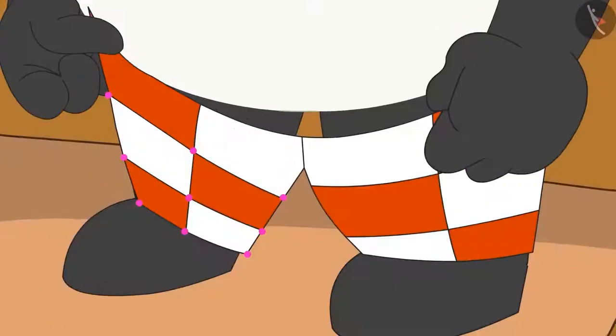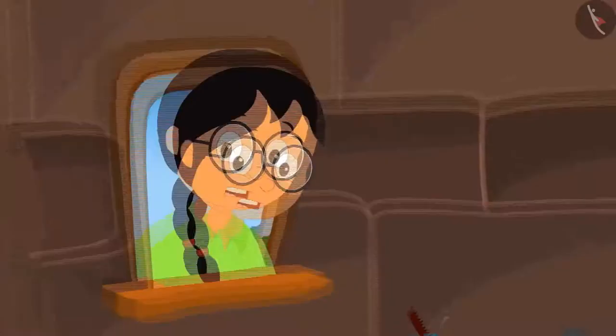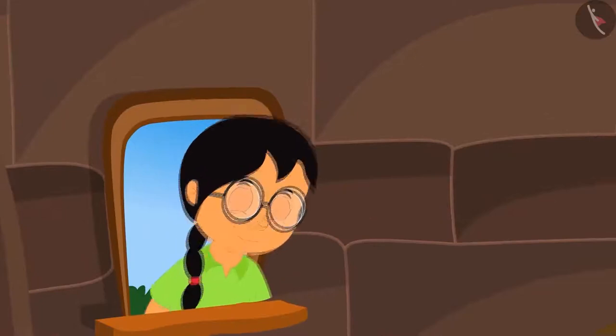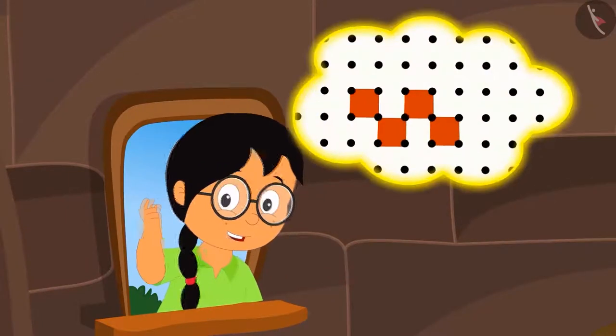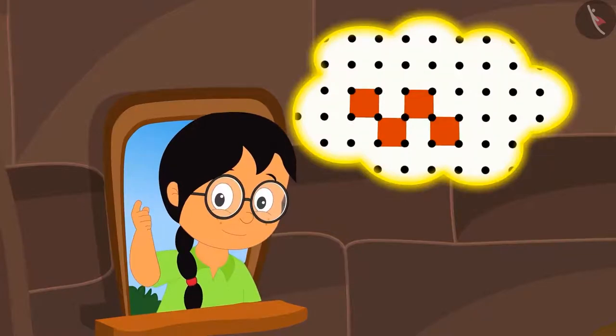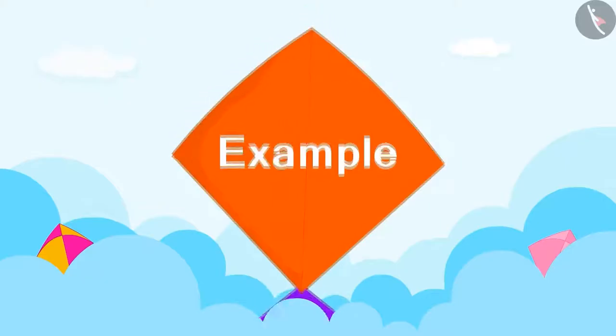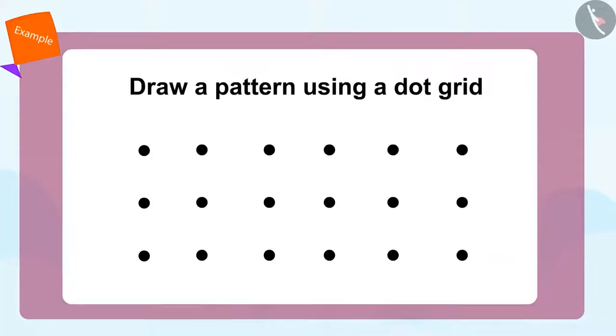Suddenly, Minoo sees a dot grid on his trousers. Minoo is shocked. With the help of a dot grid, this pattern can be easily made, Minoo thinks to herself. Come children, let's take a look at how Minoo makes this pattern using the dot grid.